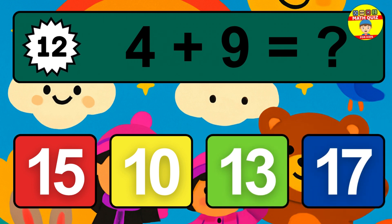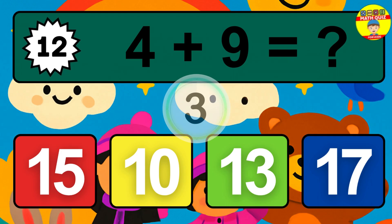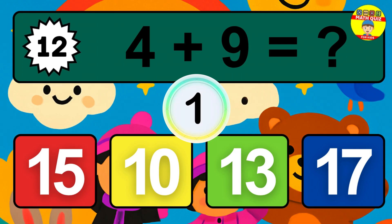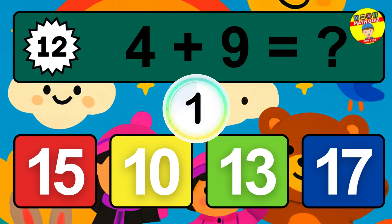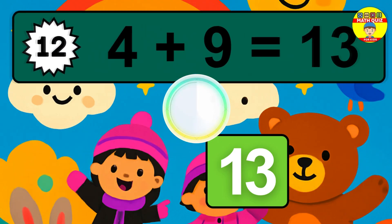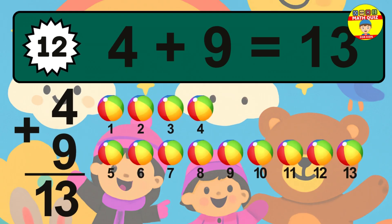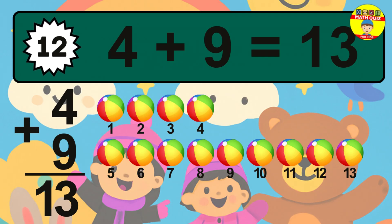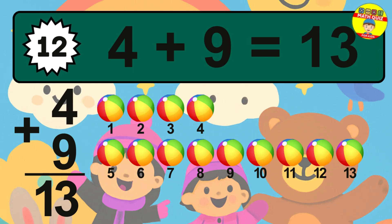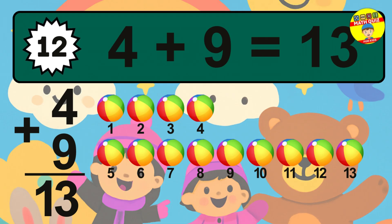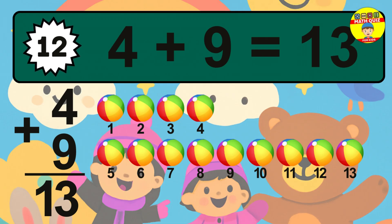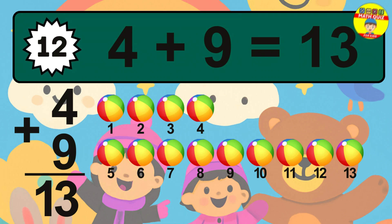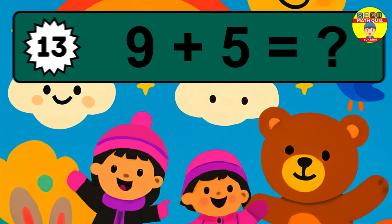Question 12. 4 plus 9 equals what? The answer is 4 plus 9 is 13. Let's count it: 1, 2, 3, 4, 5, 6, 7, 8, 9, 10, 11, 12, 13.